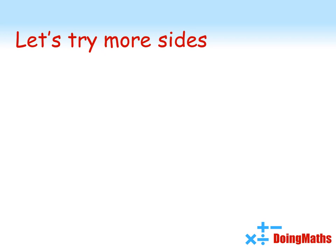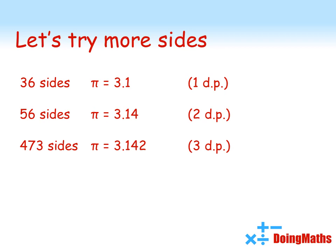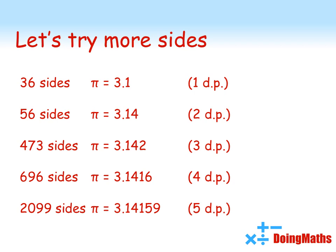So to find pi even just to one decimal place, we would need a 36-sided shape. That will give us pi equal to 3.1. To be more accurate still and get to two decimal places, we would need a 56-sided shape. To get pi accurate to three decimal places, we would need 473 sides. For four decimal places, we would need 696 sides. And just to get a value of pi to five decimal places, we would need to use polygons with 2,099 sides. So this is obviously not the most effective method of finding a value for pi. There are far, far better algebraic versions, but using geometry, this is quite a fun method.